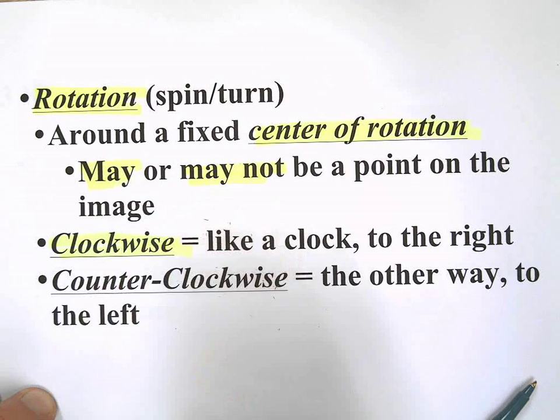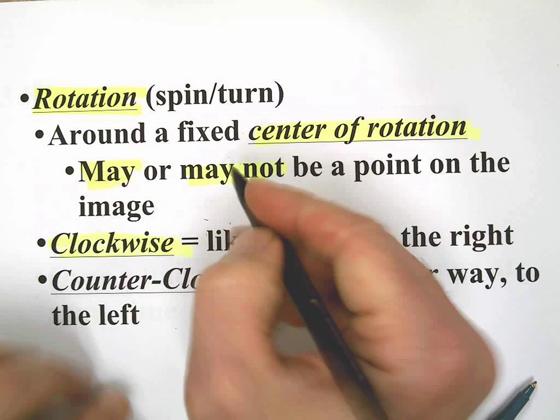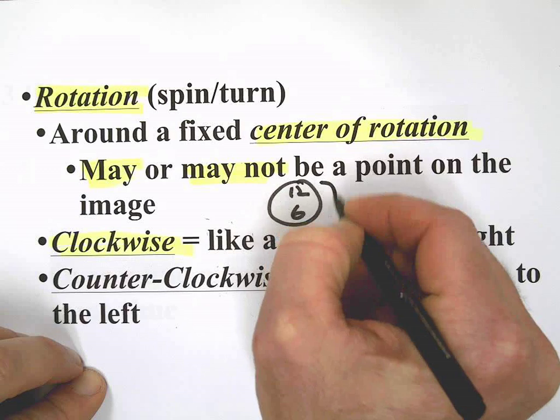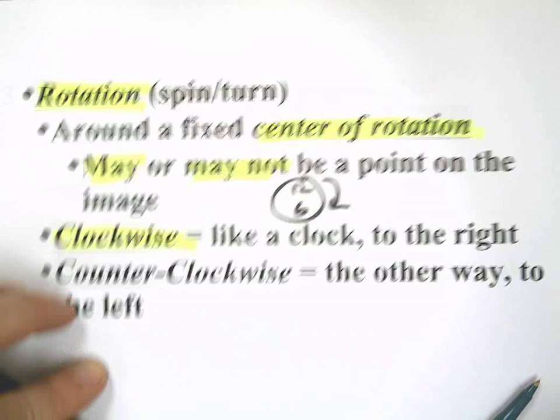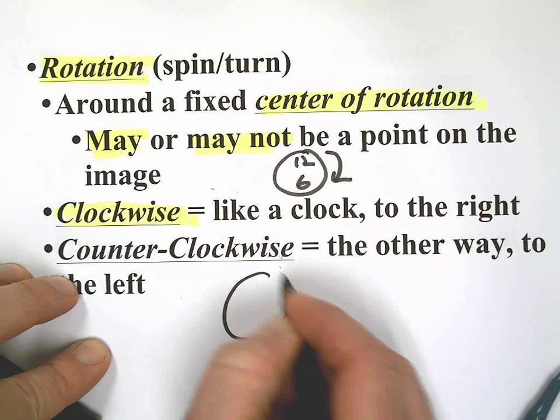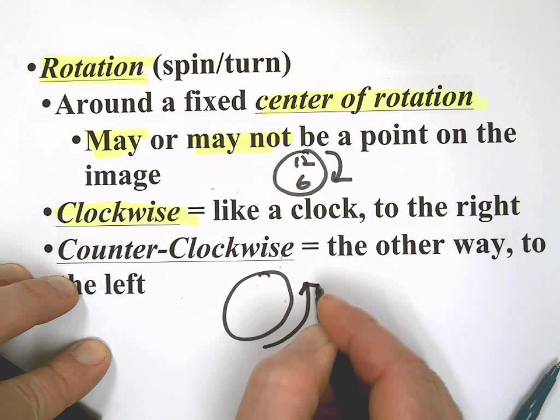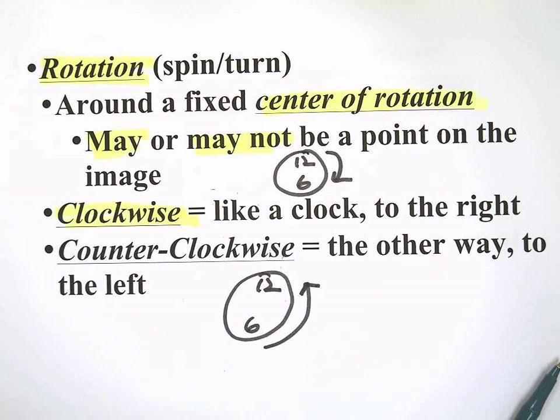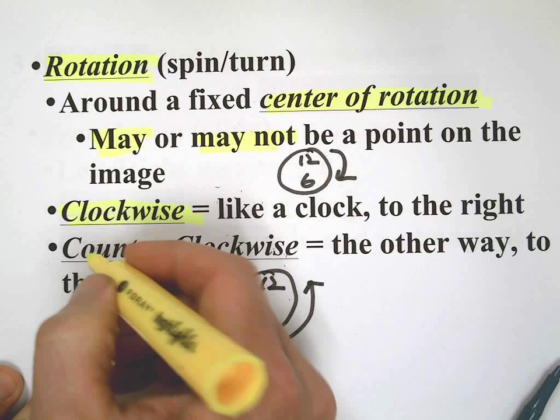And of course, we can either go clockwise like a clock. Right, there's 12 o'clock, there's 6 o'clock. Clockwise is that way, or counterclockwise is going the other way, going from 6 o'clock to 12 o'clock, to the left.